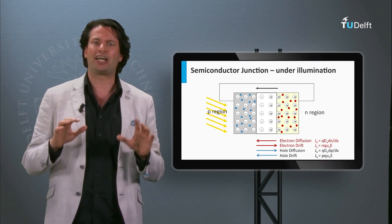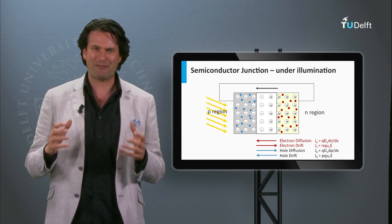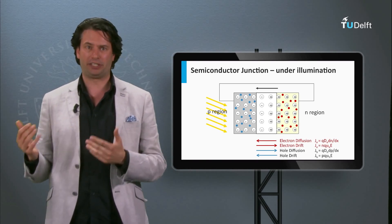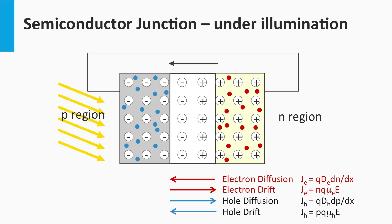Now we are going to shine light on the device, meaning we are looking at a solar cell. Light is incident from the left on the p-region. We assume the light is being absorbed in the p-region and the n-region. The absorption of the photons will generate electron-hole pairs. Importantly, light absorption only affects the density of the minority charge carriers in doped semiconductor materials. This means that the light-excited charge carriers significantly increase the density of electrons in the p-region and the density of holes in the n-region.